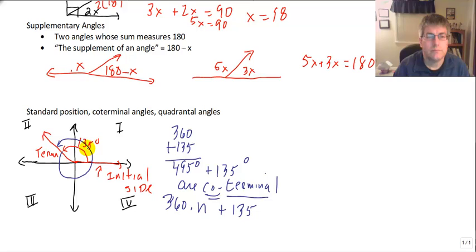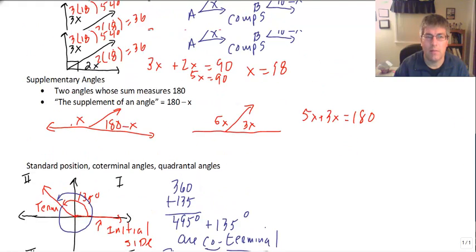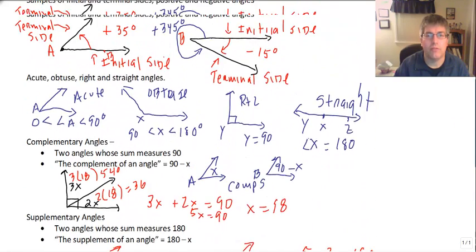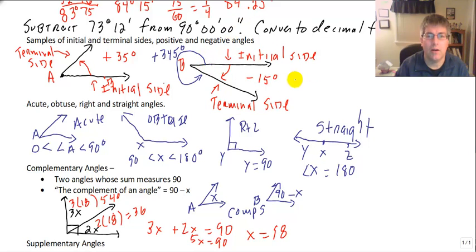A quadrantal angle is a little different. A quadrantal angle is one that terminates right between two quadrants. My first angle here, the 135 and the 495, they ended in the second quadrant. Some angles end in the third quadrant, some will end in the first, some will end in the fourth. As we saw earlier, this angle B here, this angle finished in the fourth quadrant. Angle A, at only 35 degrees, that finished in the first quadrant.